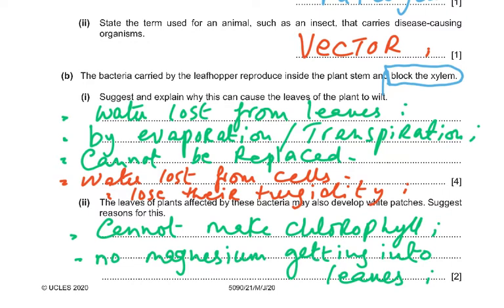The bacteria carried by the leaf hopper reproduce inside the plant and block the xylem. The xylem transports water and ions from the soil to the upper parts of the plant. Suggest why this causes leaves to wilt: water lost from the leaves by transpiration cannot be replaced, so cells lose their turgidity and the leaves wilt.